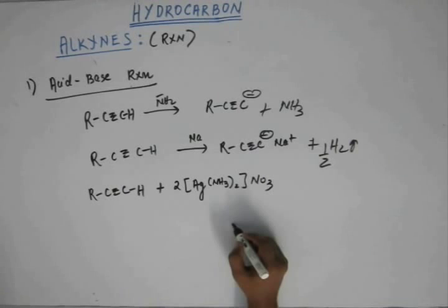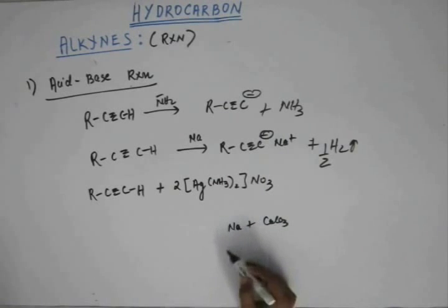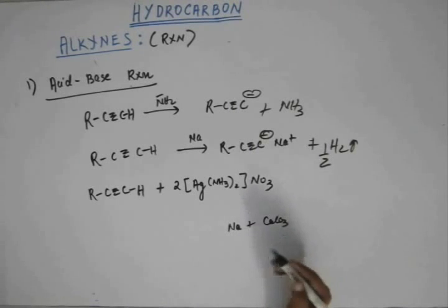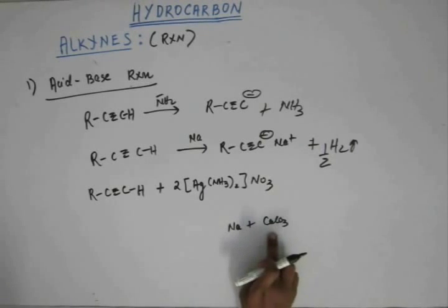For example, if you have sodium and you have calcium carbonate, then the sodium is going to participate in reaction and going to form Na+. And this calcium is going to form metallic calcium because sodium is more reactive than calcium.